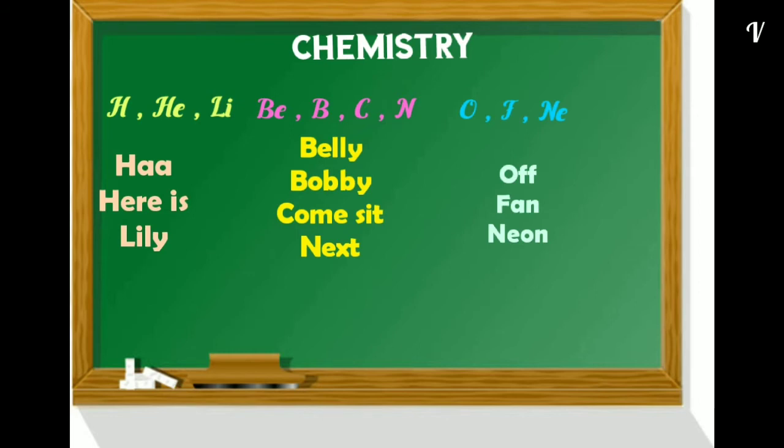Here for symbols, if there are two letters, capital letter followed by the small letter. If it is only one letter, it will be capital.